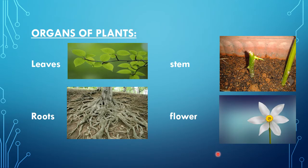Here are the organs of plants. The organs present in plants are: leaves, roots, stem, and flower. The function of a leaf is to prepare the food for the plant.